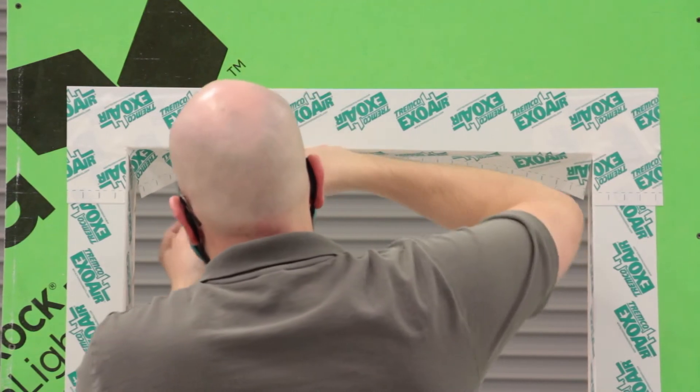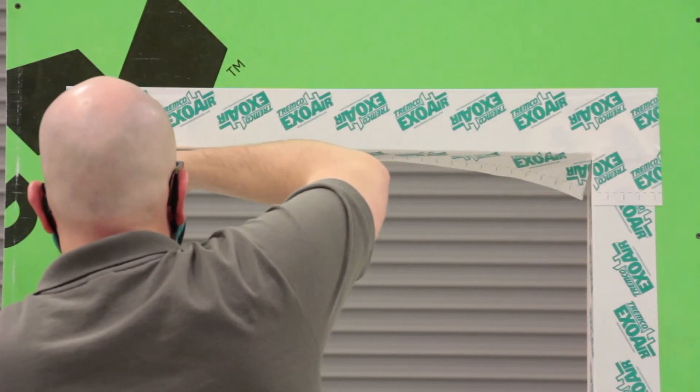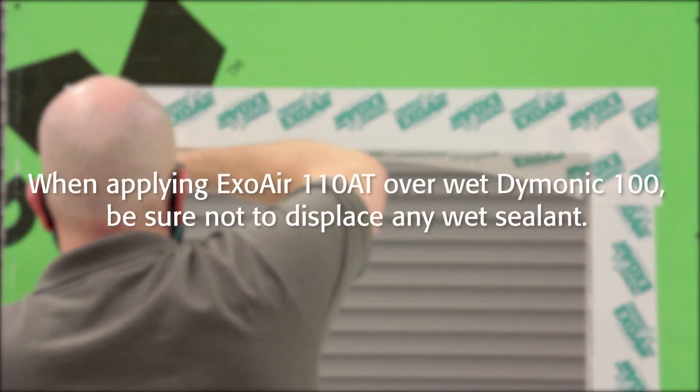Note that ExoAir 110AT sheets can be applied on top of uncured Deimonic 100. In this instance, care should be taken not to displace any wet sealant.